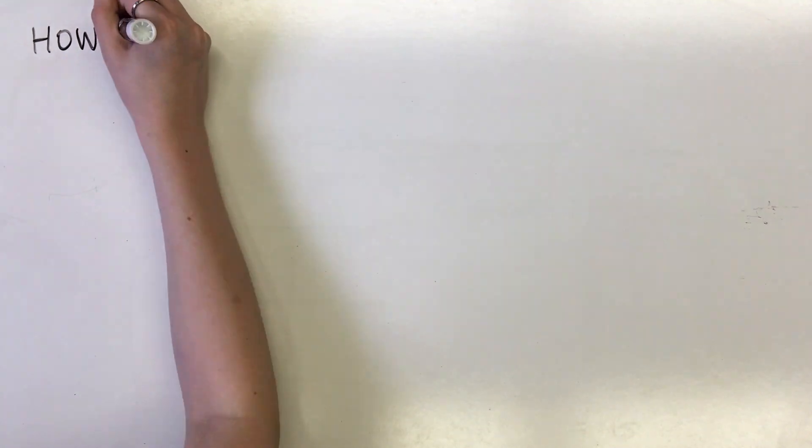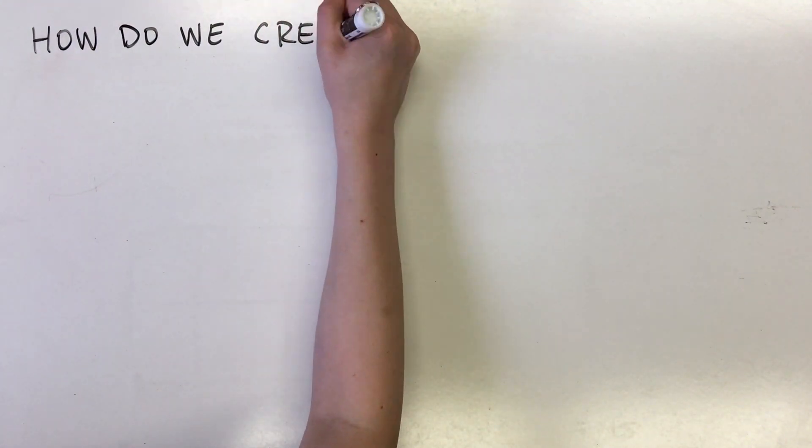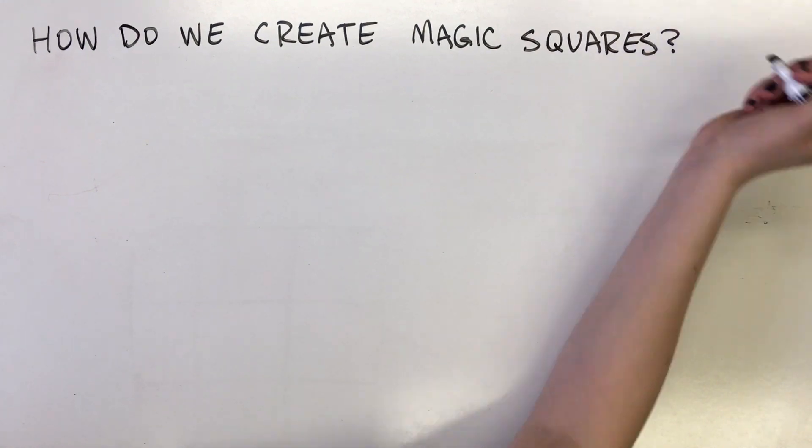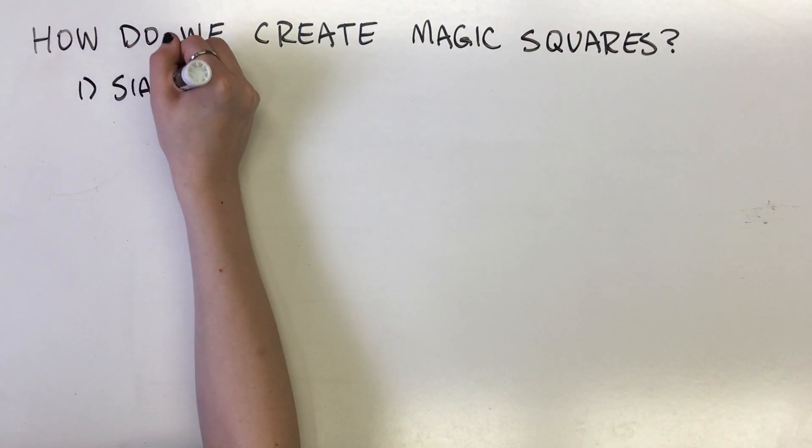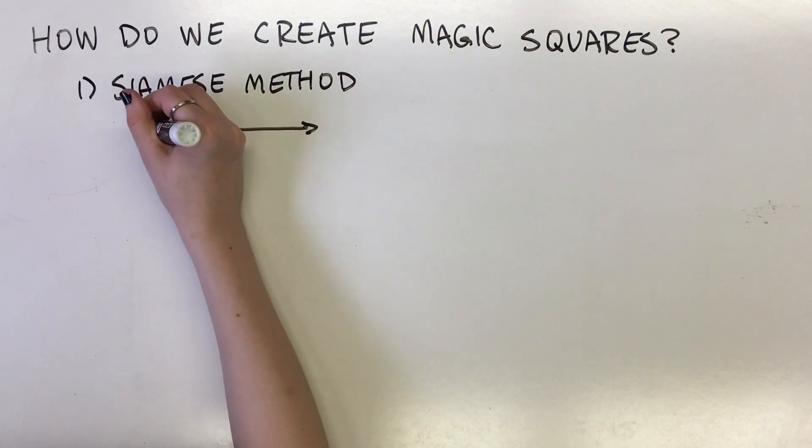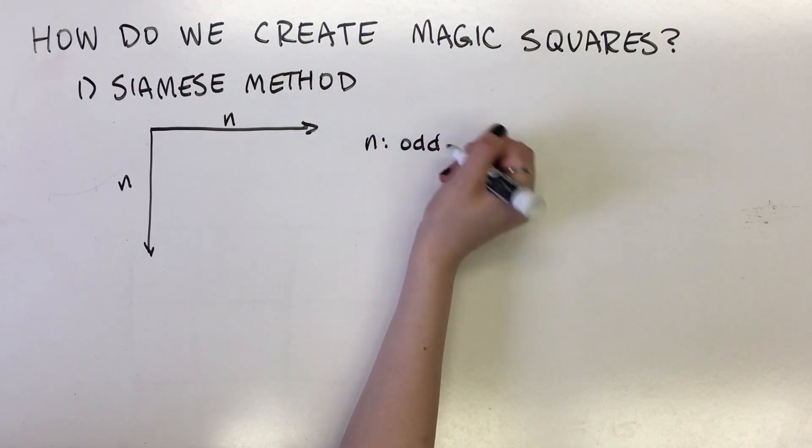We will discuss the two most prominent methods for creating n by n magic squares. One is for creating an n odd magic square, and the other method for creating an n even magic square. The Siamese method creates magic squares of odd degree.